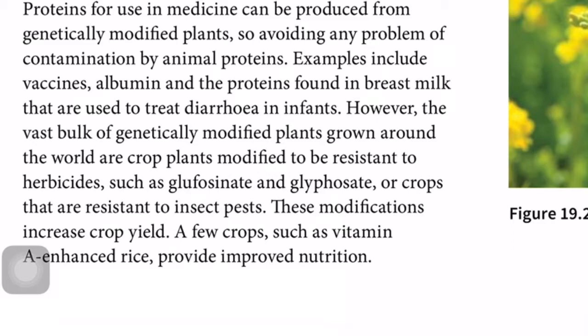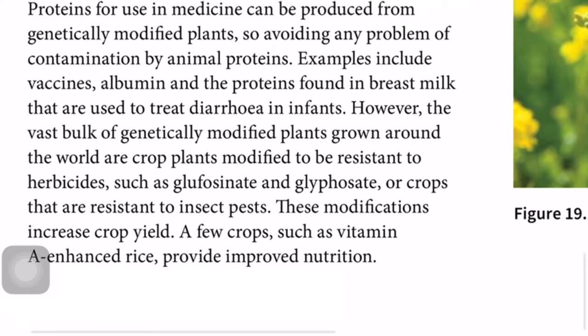The vast bulk of genetically modified plants grown around the world are crops modified for resistance to herbicides such as glufosinate and glyphosate, or crops that are resistant to insect pests. This modification increases crop yield. A few crops such as vitamin A-enhanced rice provide improved nutrition.